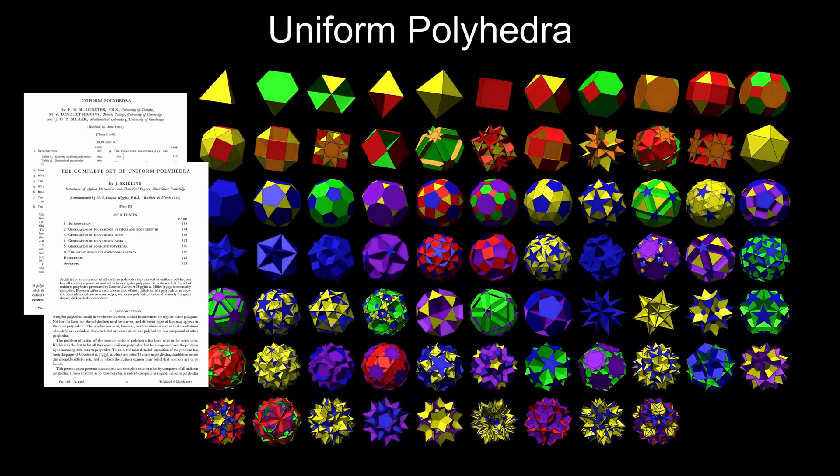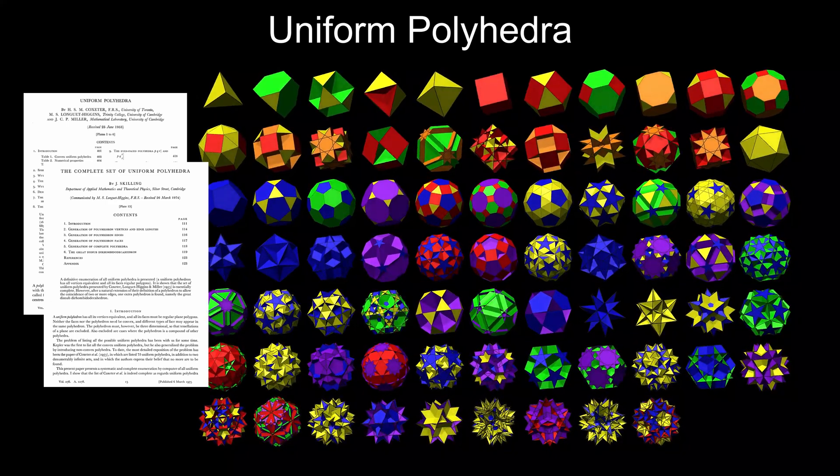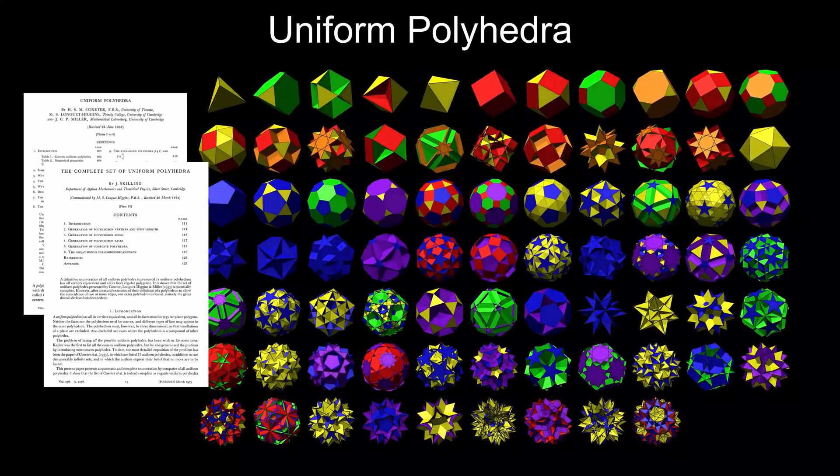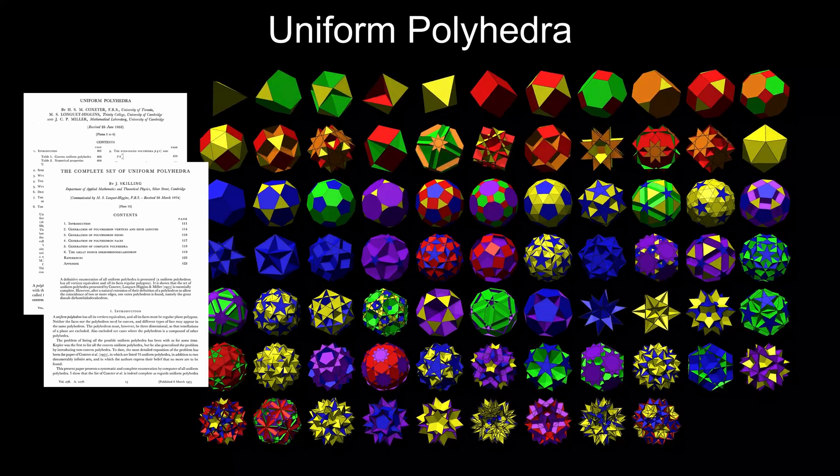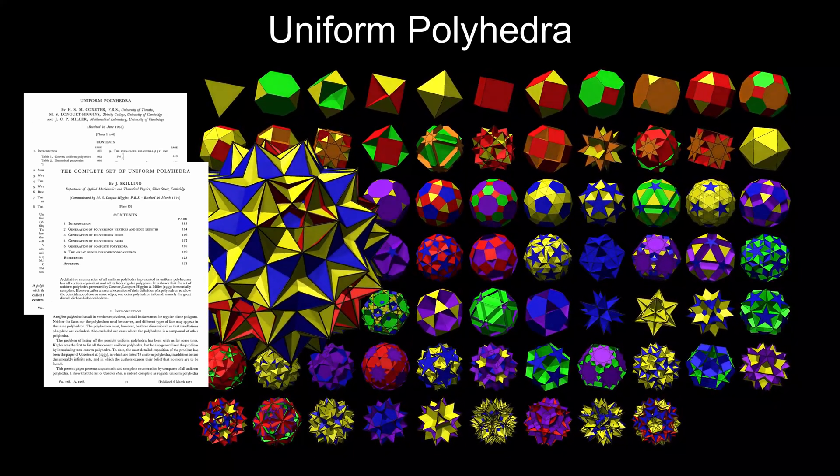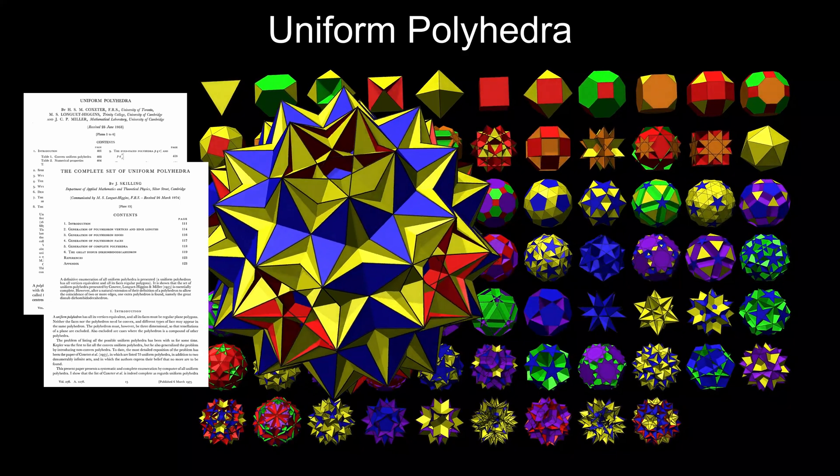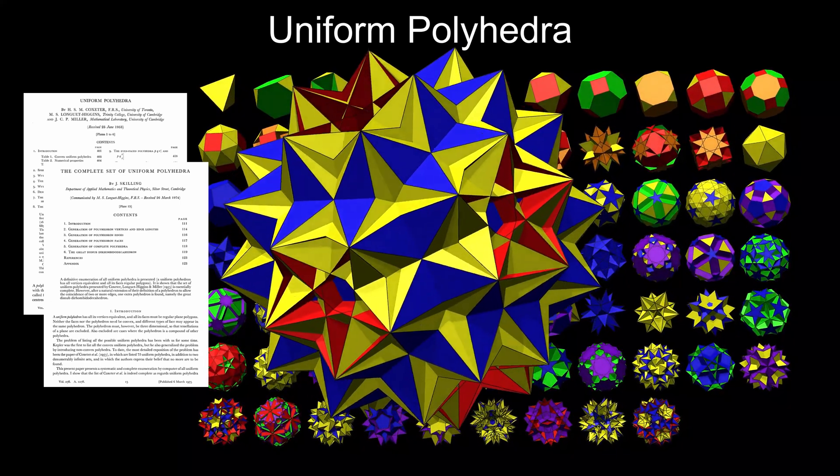His programs found 76 of them. The extra one is this controversial shape, which he called the Great Disnub Dirhombicosidodecahedron, but is now more commonly referred to as simply Skilling's figure.